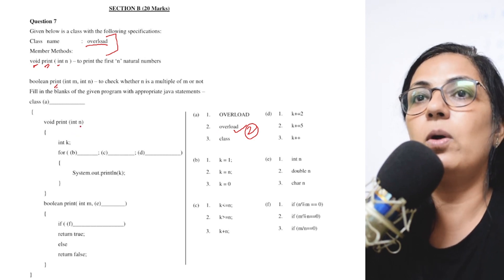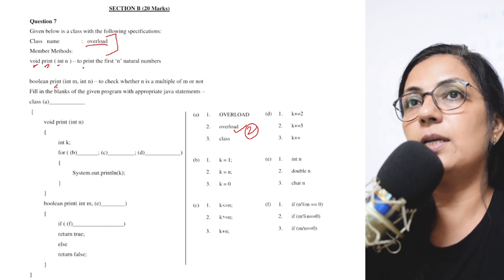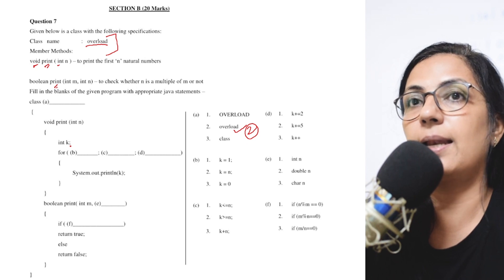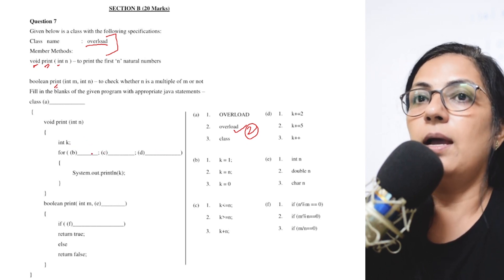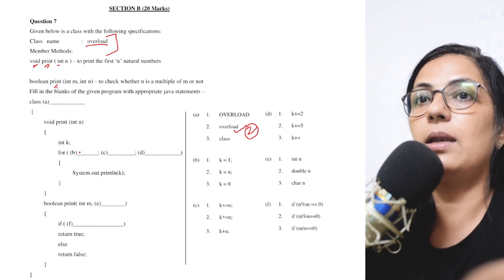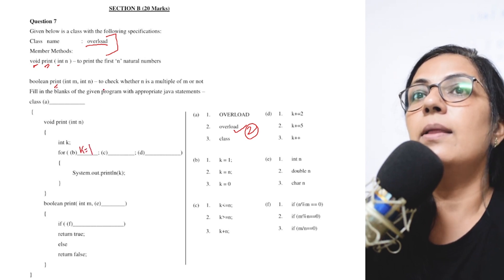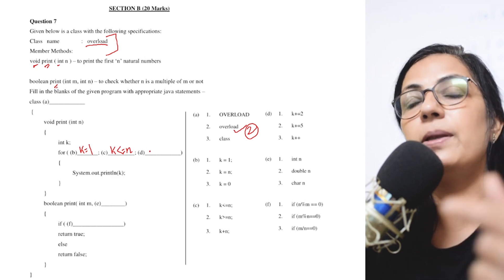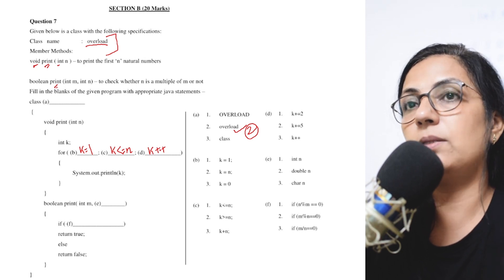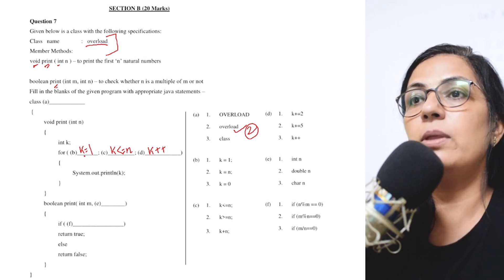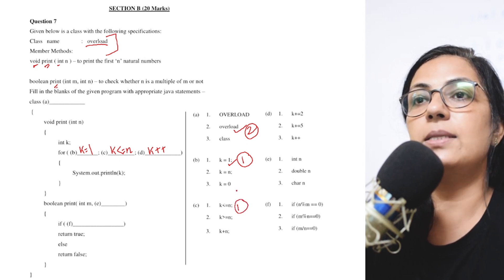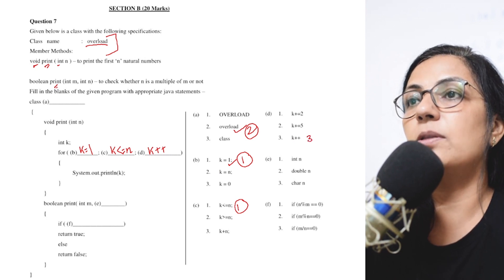Now we look at the function 'void print(int n)'. This function is to print the first n natural numbers. In the function body, k is declared as int type, and in the for loop we need to fill three values. The first natural number is 1, so it has to be k equals 1 — that is blank B, option 1. Till where? k less than or equals to n — that is blank C, option 1 again. And we print all natural numbers, so it is k++ — that is blank D, option 3.